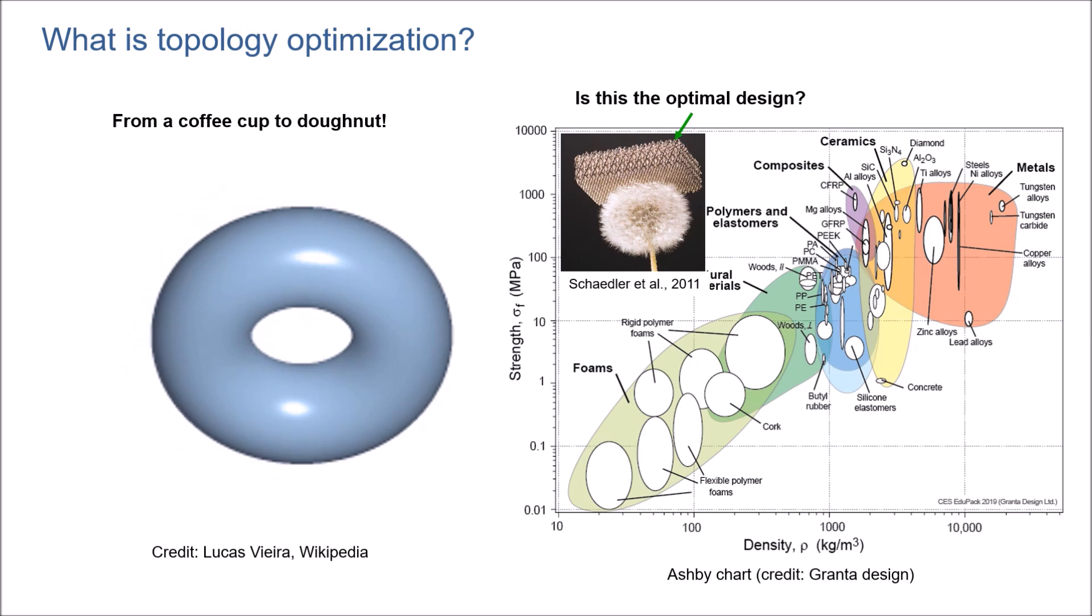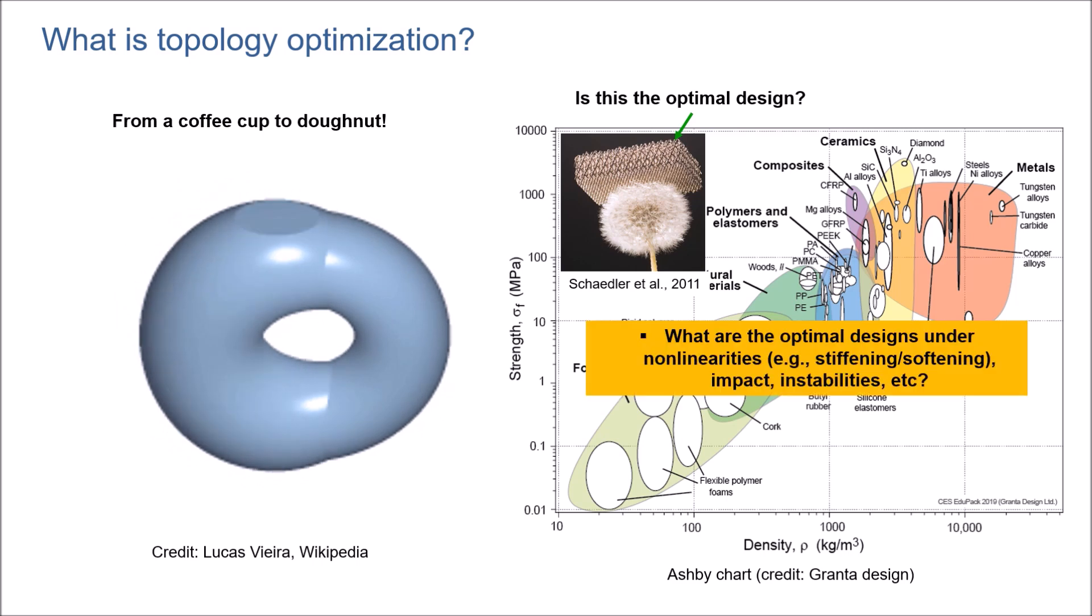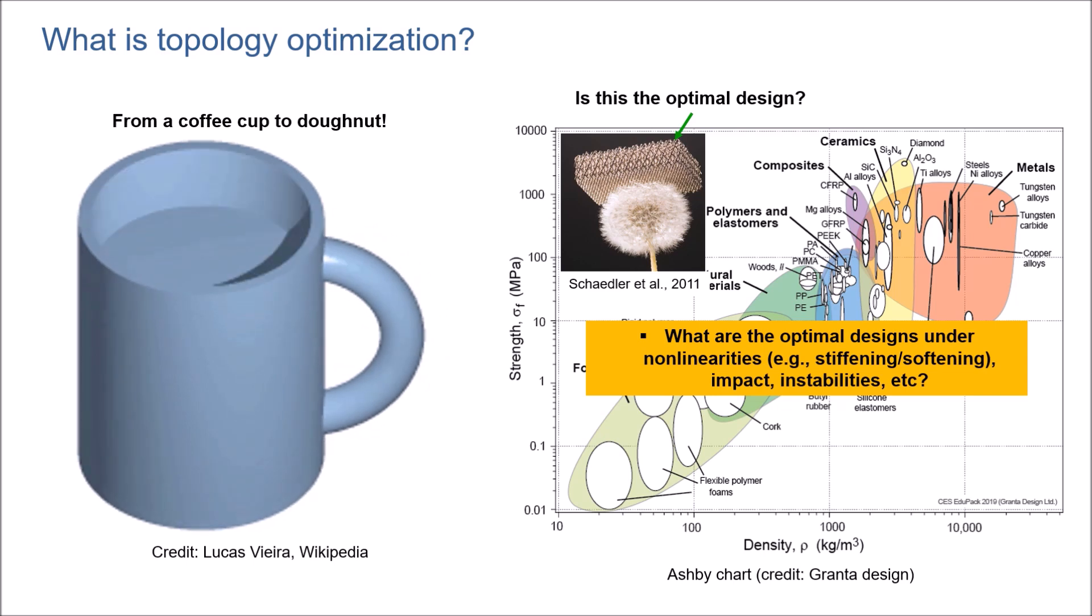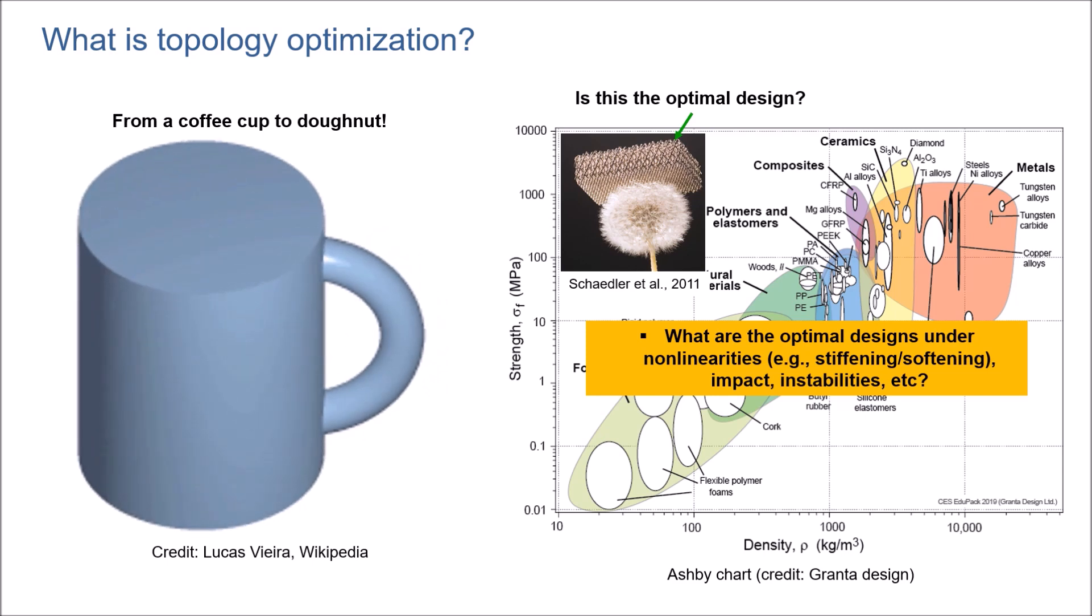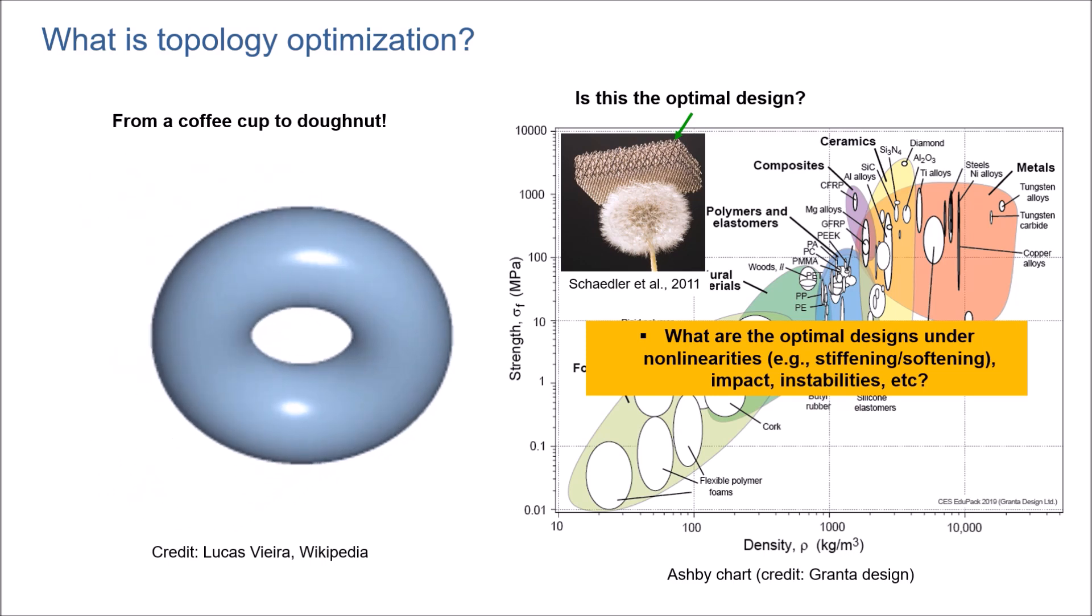Now the main question is if this micro-lattice is an optimal design. What happens to this kind of design when it goes under non-linearities and structural mechanics, like stiffening or softening under compression or tension, when there is an impact on the structure, or when we have multiple instabilities during the material response. Then, of course, we can extend this topic to include physics like heat transfer, fluid dynamics, and other multi-physics problems.